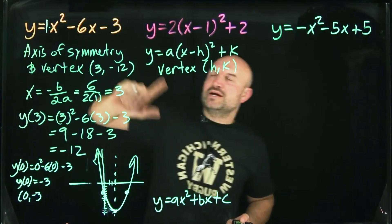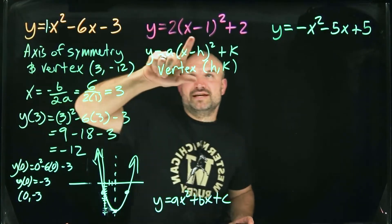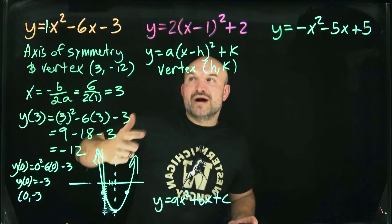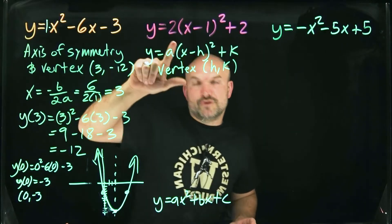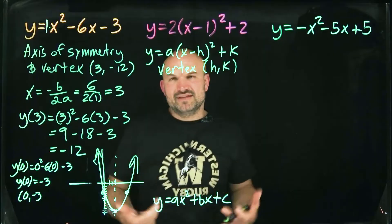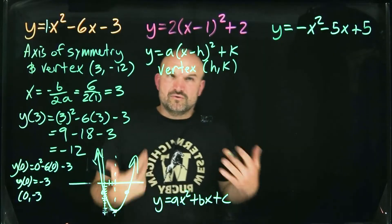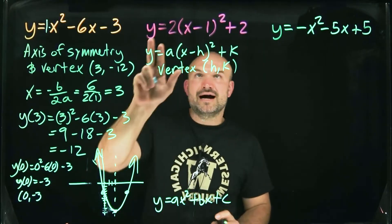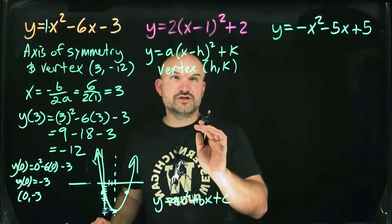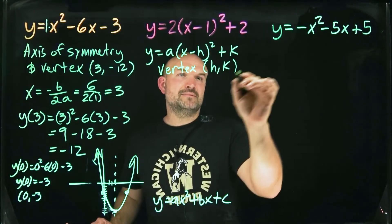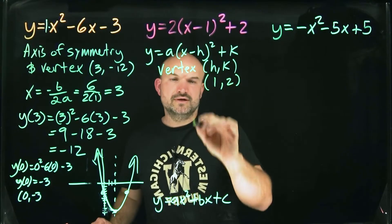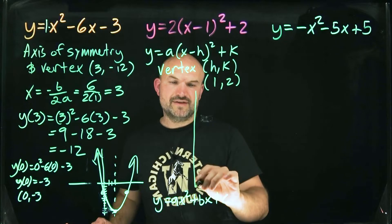A lot of times we need to convert from standard form to vertex form, which is done by completing the square. To keep things straightforward, I'll give the equation already in vertex form. We know our vertex, and in this problem a equals positive two.